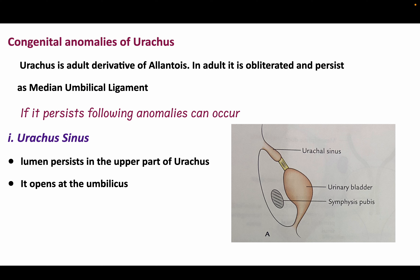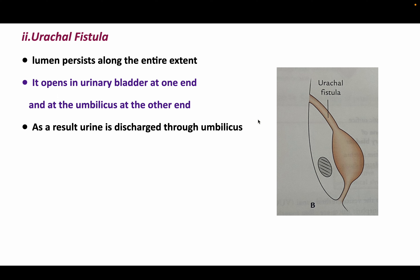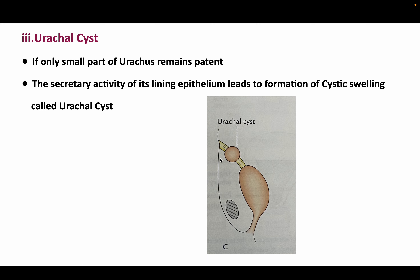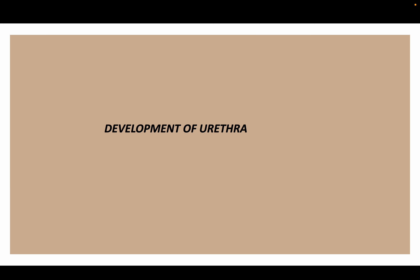The urachus is the adult derivative of the allantois; in the adult it is obliterated and persists as the median umbilical ligament. If it persists, the following anomalies can occur: urachal sinus, where the lumen persists in the upper part opening at the umbilicus with a blind end and the rest replaced by fibrous tissue; urachal fistula, where the lumen persists along its entire extent opening into the urinary bladder at one end and the umbilicus at the other, causing urine to be discharged through the umbilicus; and urachal cyst, where only a small part remains patent and the secretory activity of its lining epithelium leads to cystic swelling.